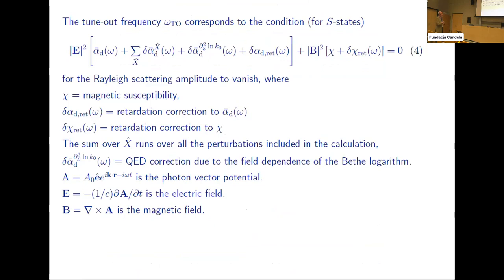So the tune-out frequency corresponds for S states - there's an electric field part. Here's the polarizability sum over all these perturbations. This is a correction due to the Bethe logarithm, a QED correction. And these are retardation corrections. Here's the magnetic field part, magnetic susceptibility, and also a retardation correction to the magnetic susceptibility. What we're looking for - we want to vary the frequency such that the sum of all these terms sums to zero. We're looking for zeros in this expression.